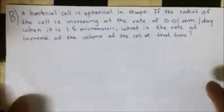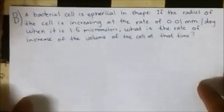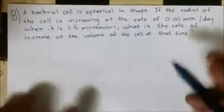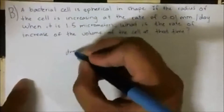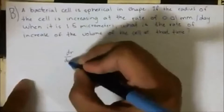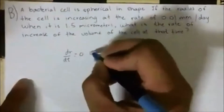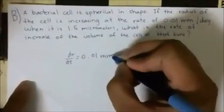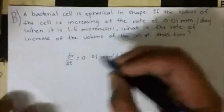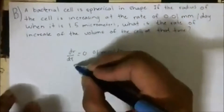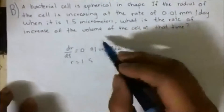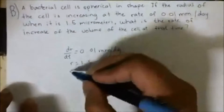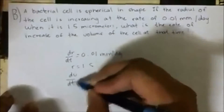A bacterial cell is spherical in shape. The radius of the cell is increasing at the rate of 0.01 micrometers per day, so dr/dt equals 0.01 micrometers per day, when the radius is 1.5 micrometers. What is the rate of increase of the volume of the cell at that time? We need to find dV/dt.